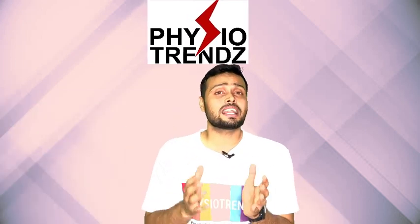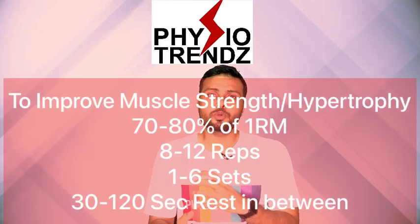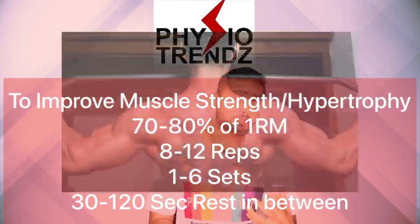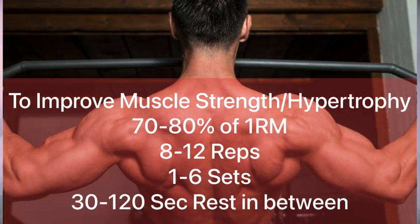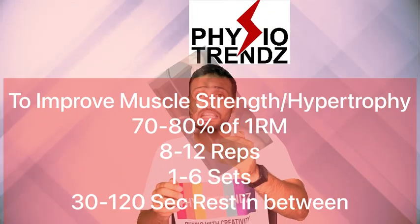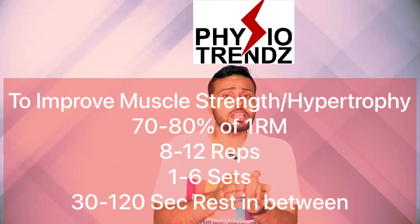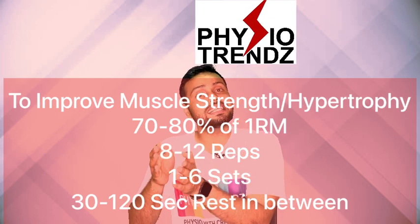Now let's say that I want to improve strength and increase the size of the muscle, which is what most of us want. For that purpose we have to perform 70 to 80 percent of the one repetition maximum weight, and we can perform 8 to 12 repetitions for 1 to 6 sets. In between we can take a break of 30 to 120 seconds.